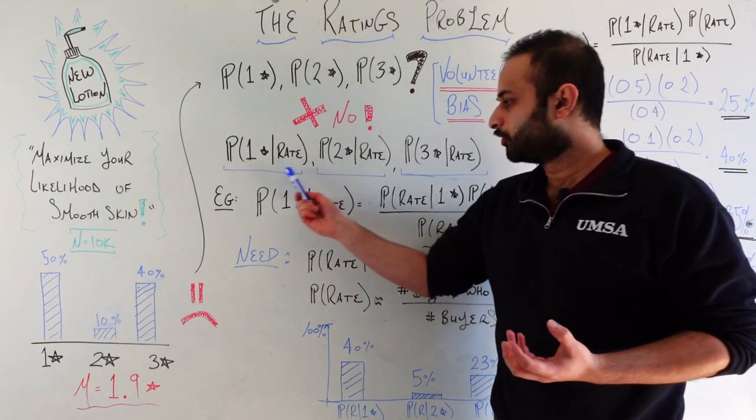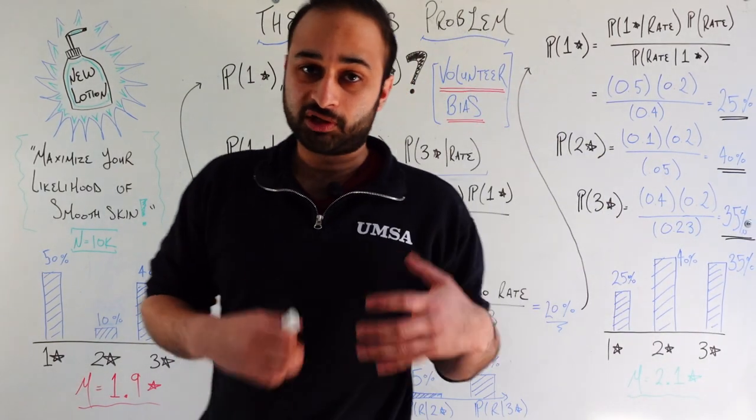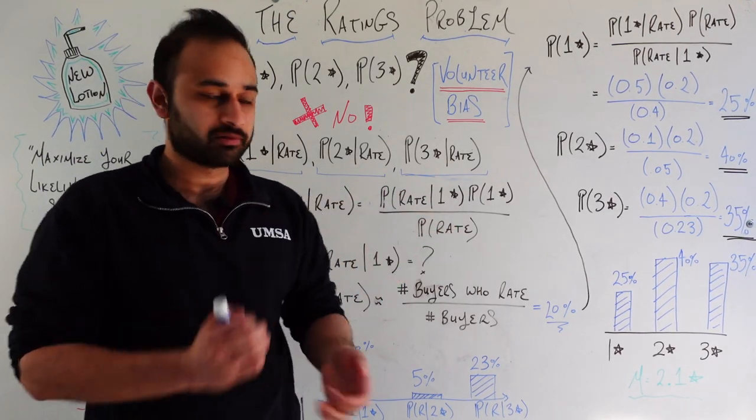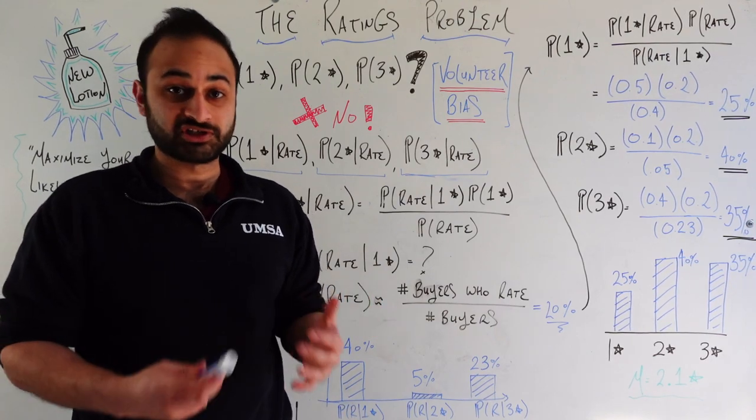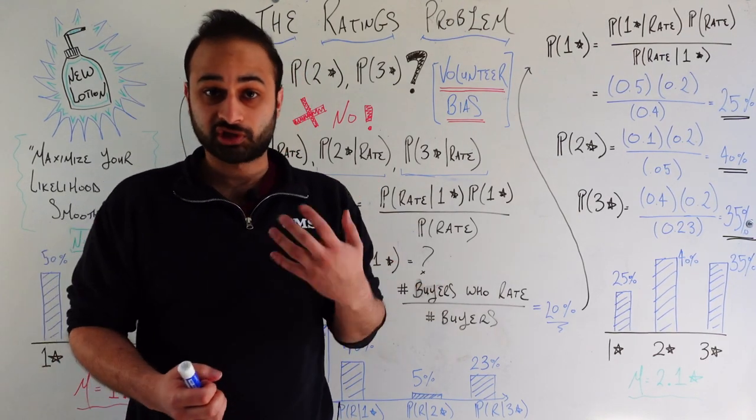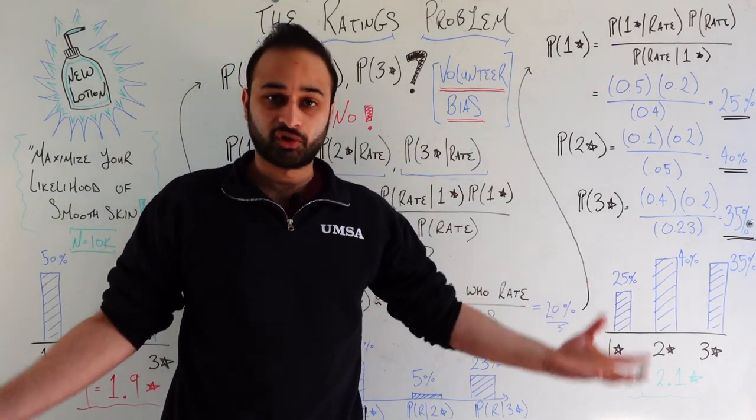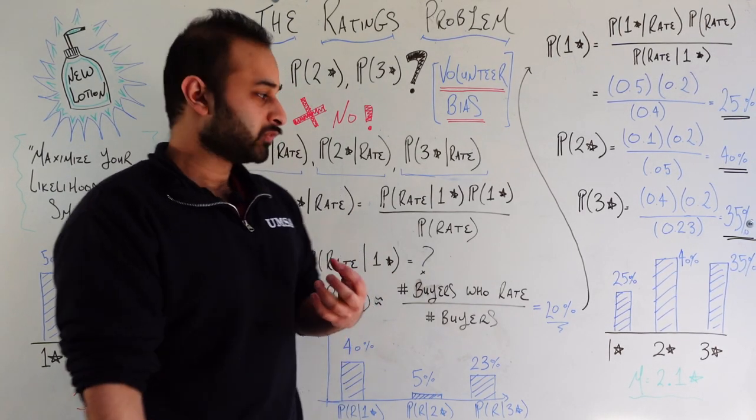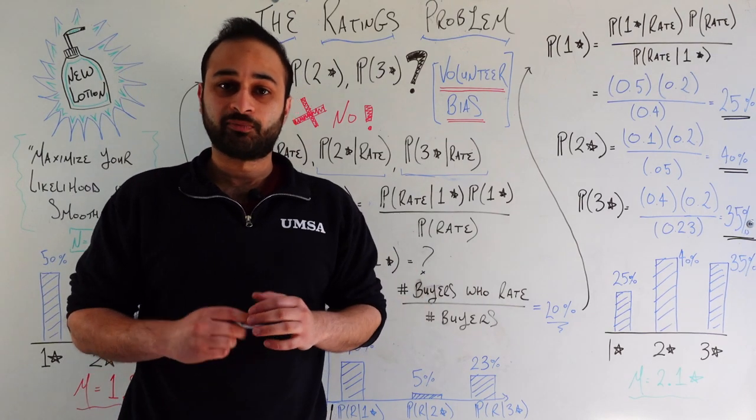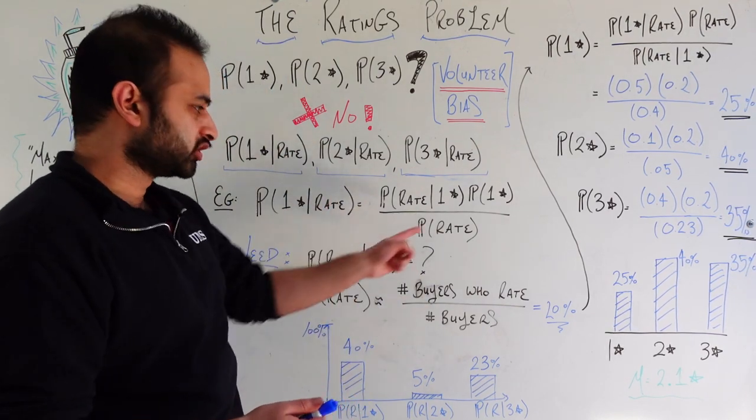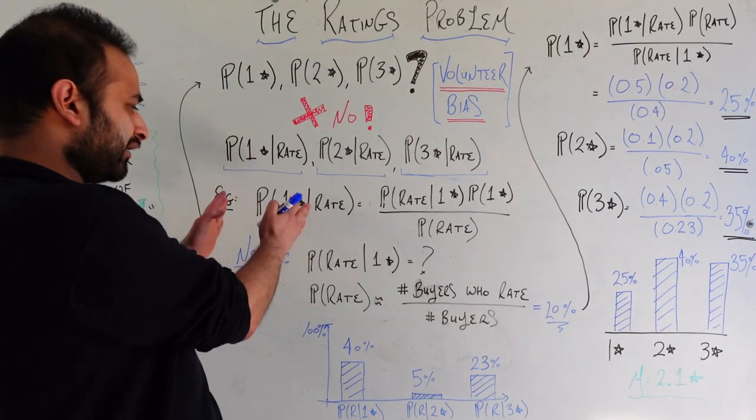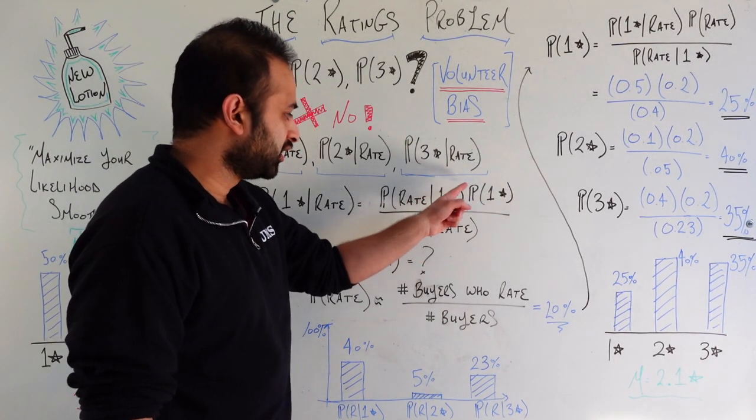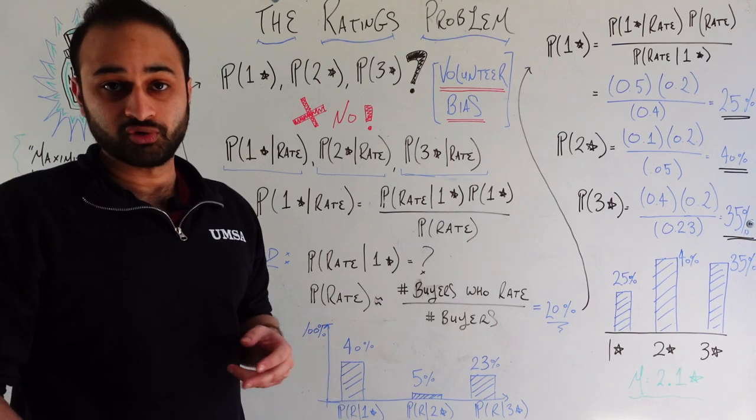So for example, we know that probability of one star given rate can be written in terms of Bayes theorem as these three probabilities. So probability of rate given one star, which is the reverse conditional. The unconditional probability of one star, which is the actual thing we're after. So probability of one star is the unconditional probability that someone would give you a one star for this product. That's the actual number that we want to get here. And all that divided by the unconditional probability that someone would rate your product. We have this equation here. We have this number on the left that comes from this biased rating data. The only question is, if we want this number here, we need to somehow get these two numbers in order to unbias the ratings.